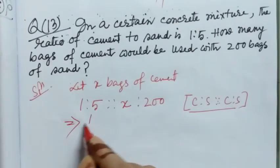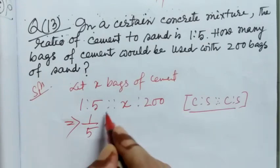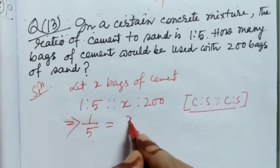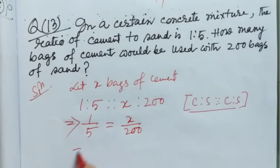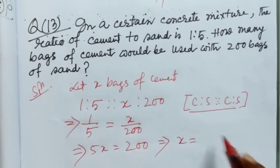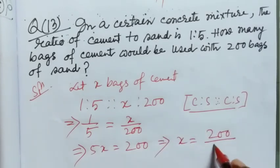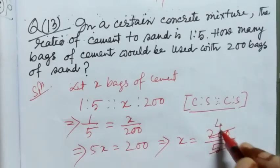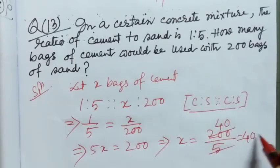Now I am calculating and finding the value of x. 1 by 5 is equal to x by 200 implies cross multiplying 5x is equal to 200 implies x is equal to 200 divided by 5, which equals 40. That means 40 bags, this is the answer.